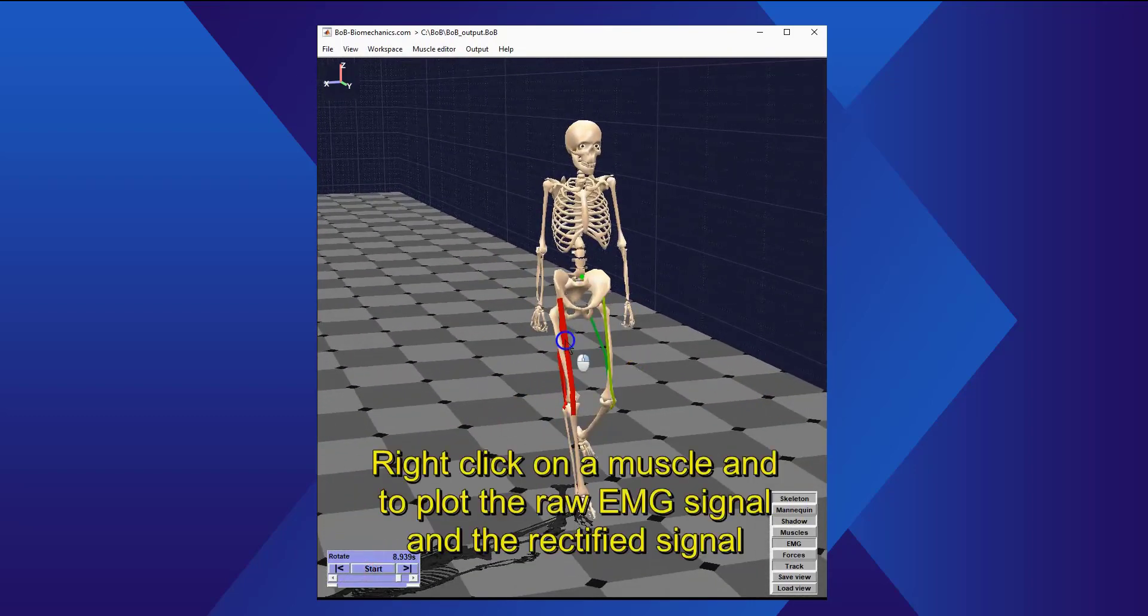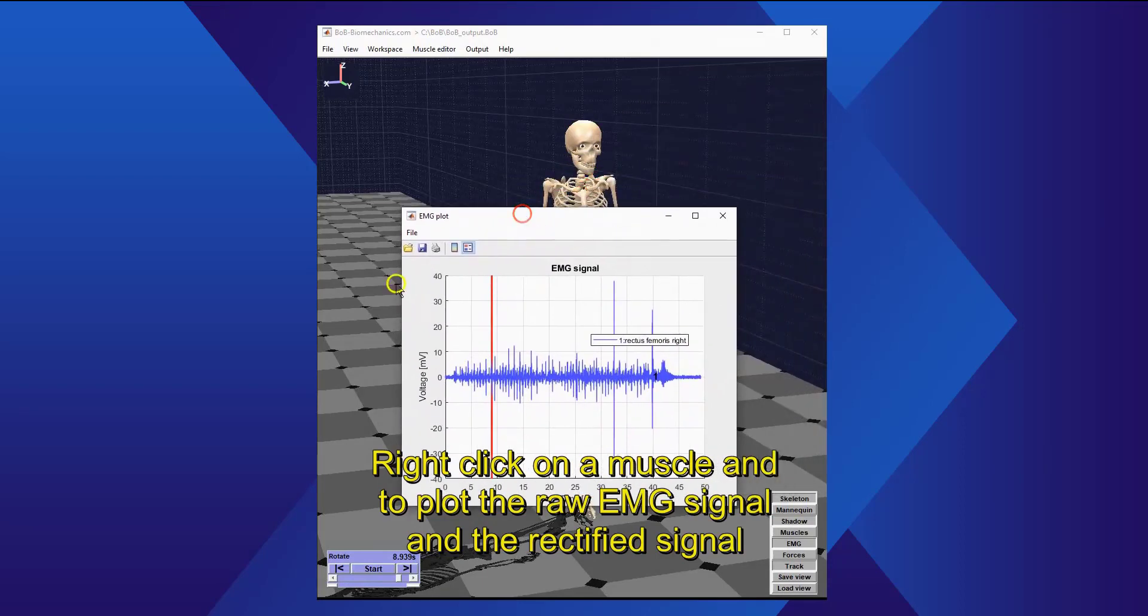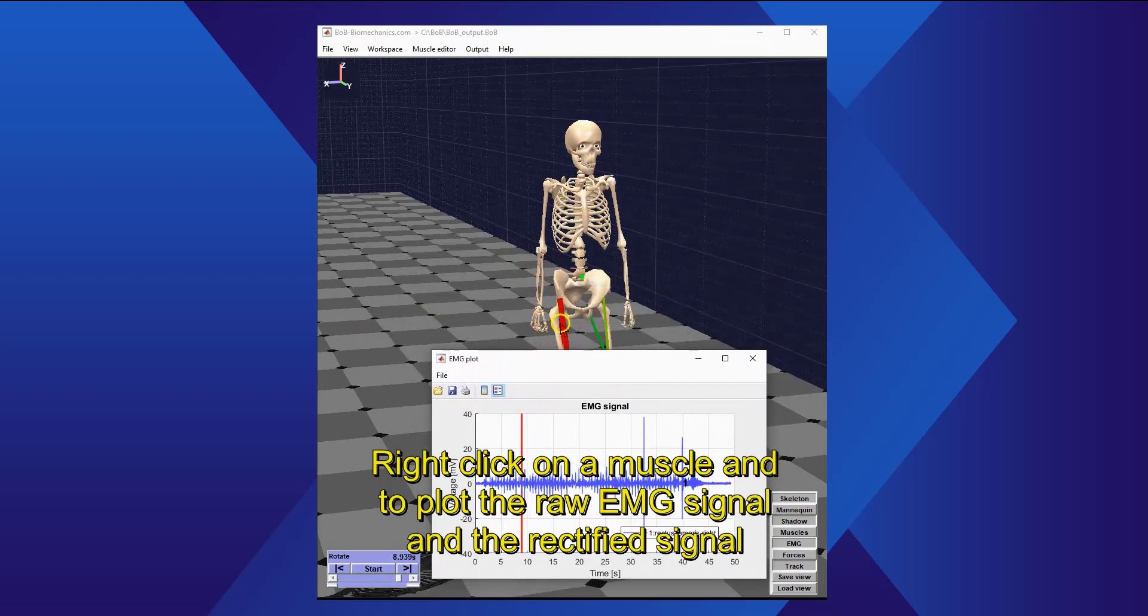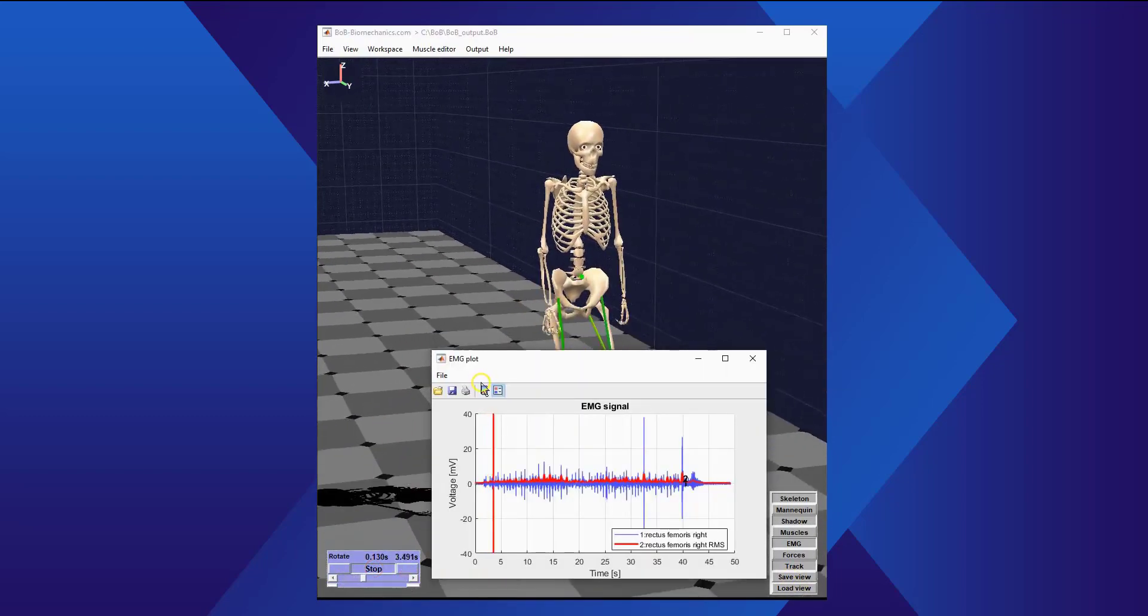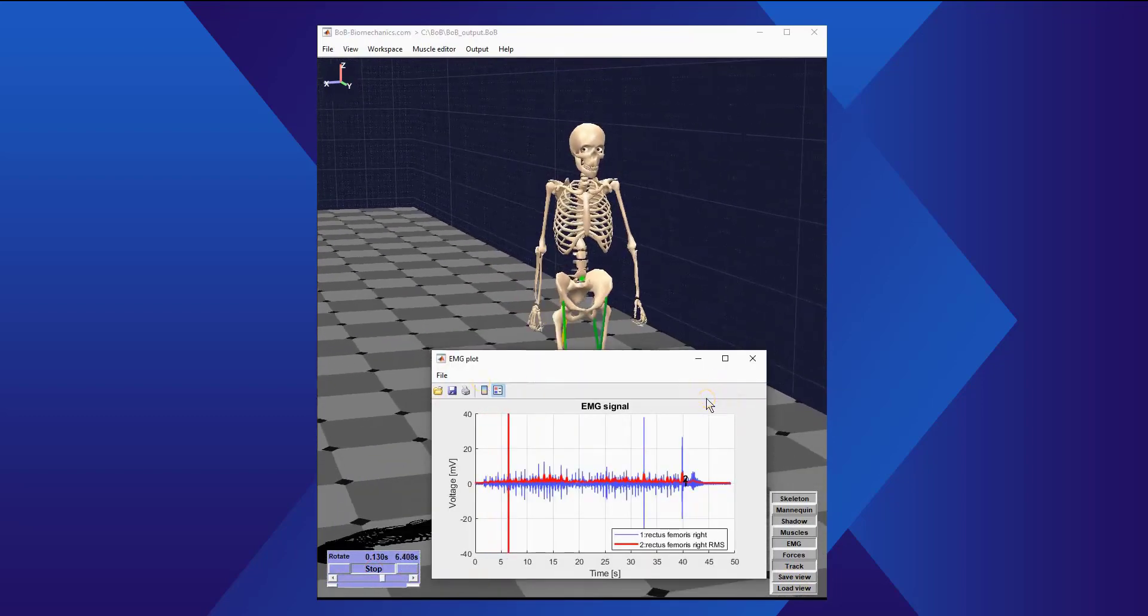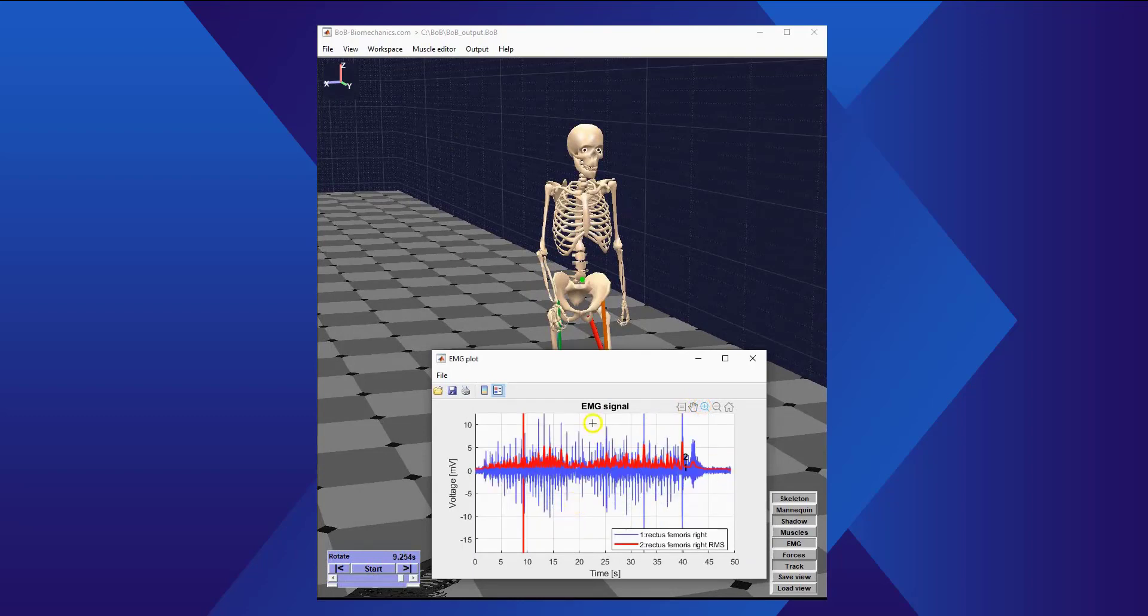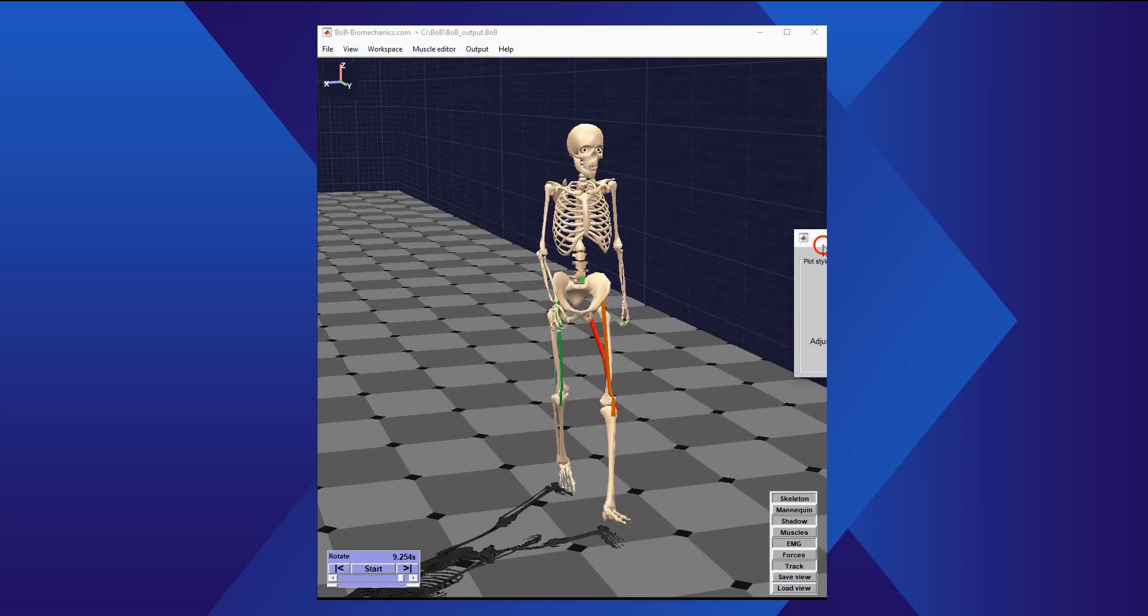Right-click on the muscle to plot the raw EMG and the rectified signal. Change the processing of the EMG signal to fit your application.